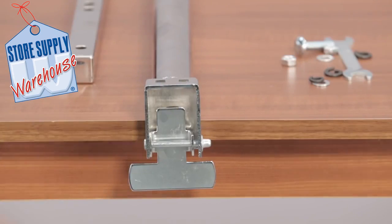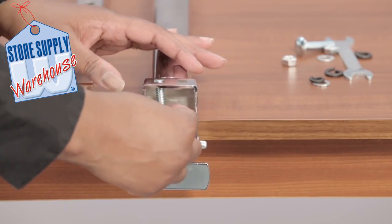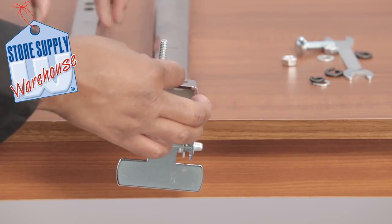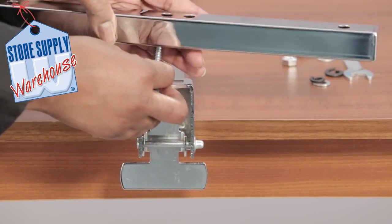Place the upright pole on its side. Insert the carriage bolts from the bottom of the upright. Place the rear base bar on top of the upright pole.